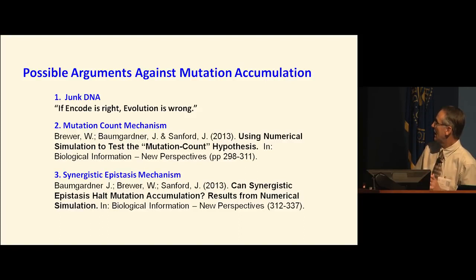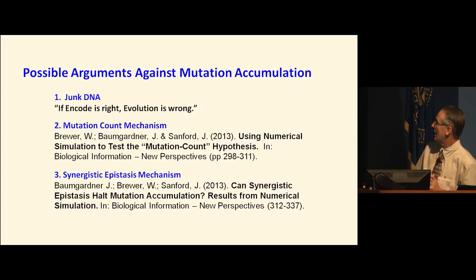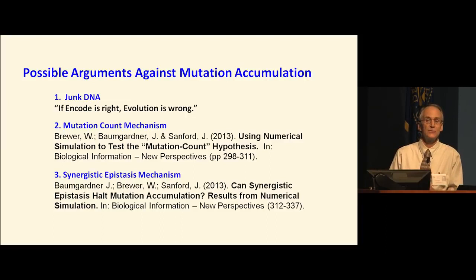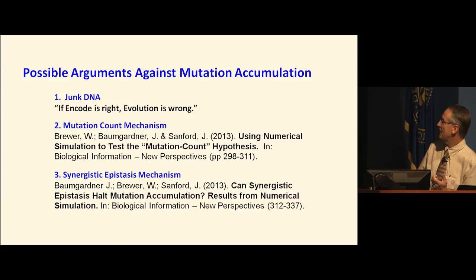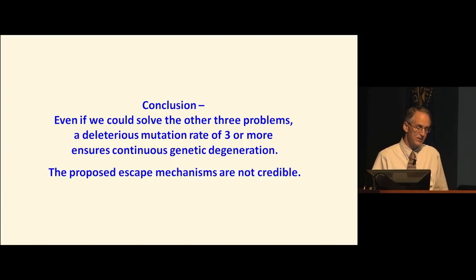All three proposed escape mechanisms have been falsified. Conclusion: even if we could solve the other three problems, a deleterious mutation rate of three or more ensures continuous degeneration. The proposed escape mechanisms are not credible. Number four is the near-neutral problem — a longer-term concern but the most significant problem. The near-neutral problem was first recognized by Mueller, who noted that there comes a level of advantage 'too small to be effectively seized upon by selection — its voice lost in the noise.' Whether you're talking about beneficial or deleterious mutations, the idea is the same: you have a genome of three billion letters, and changing one random letter will have a tiny fitness effect — like rust on a car.